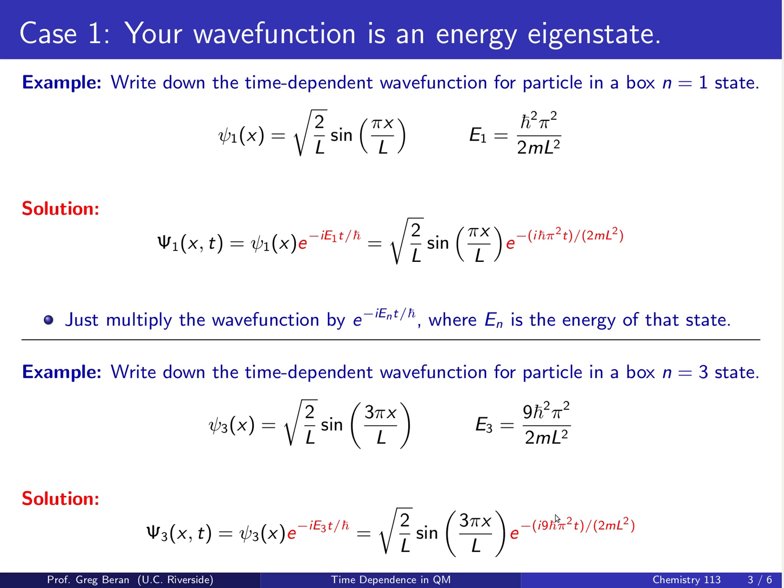Which is 9 h-bar squared π squared over 2mL squared, instead of just 1 h-bar squared π squared over 2mL squared. And so you'll notice we have a slightly different answer with the 9 in the exponential. And of course, we have ψ₃ here instead of ψ₁. So that's our time-dependent wave function for ψ₃.